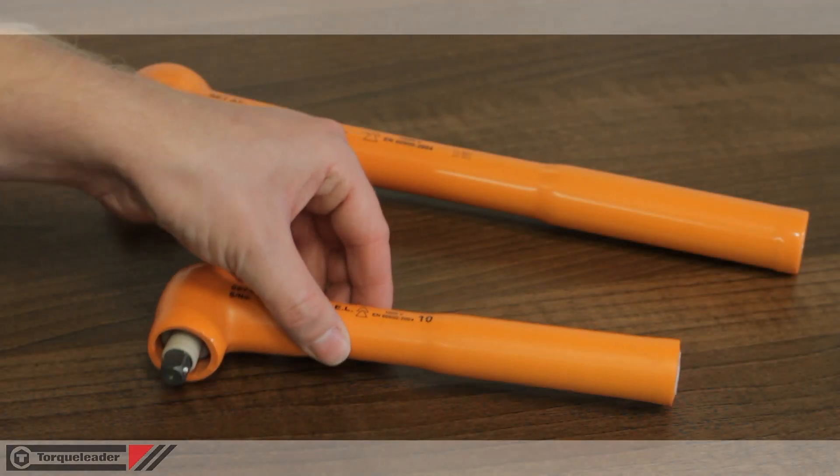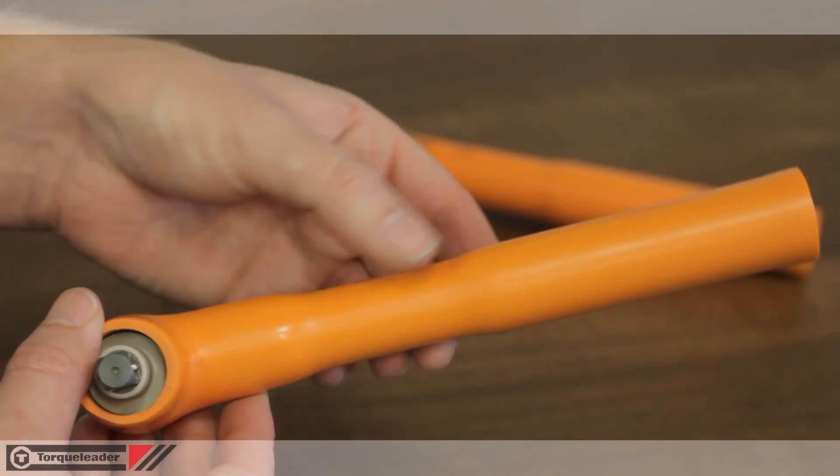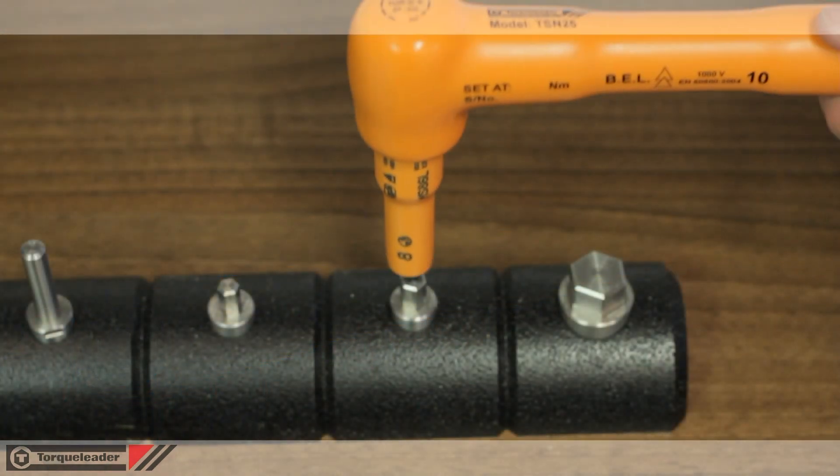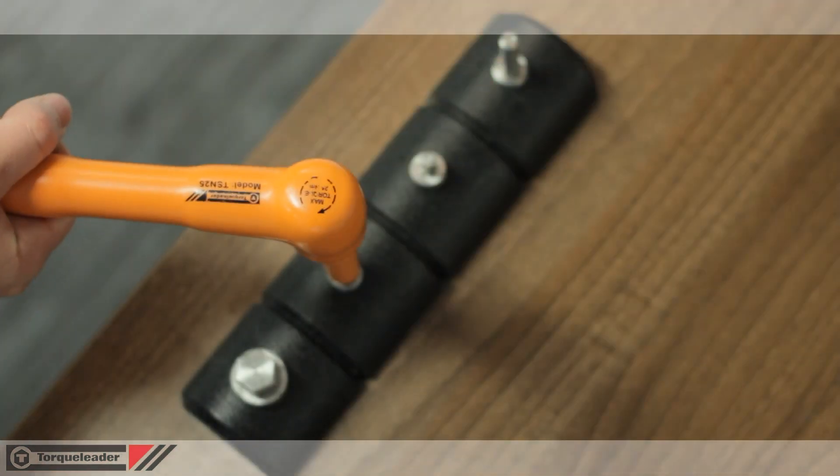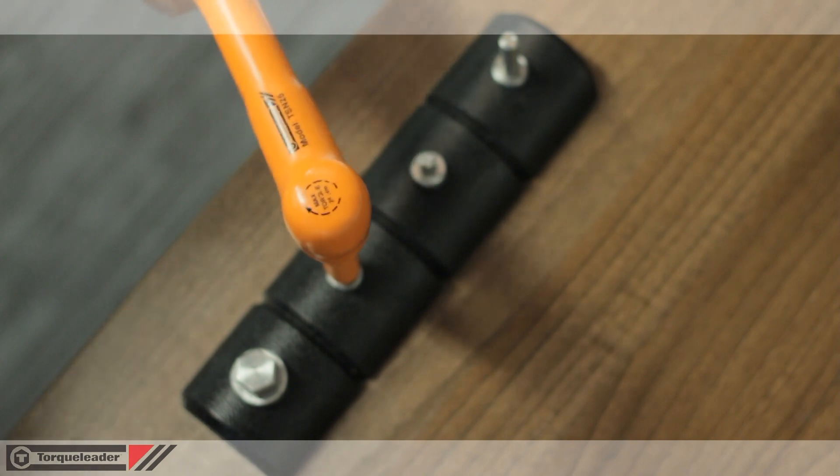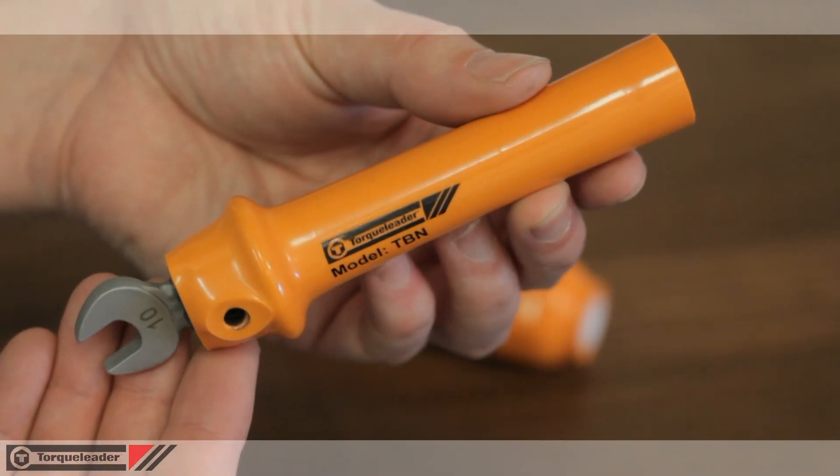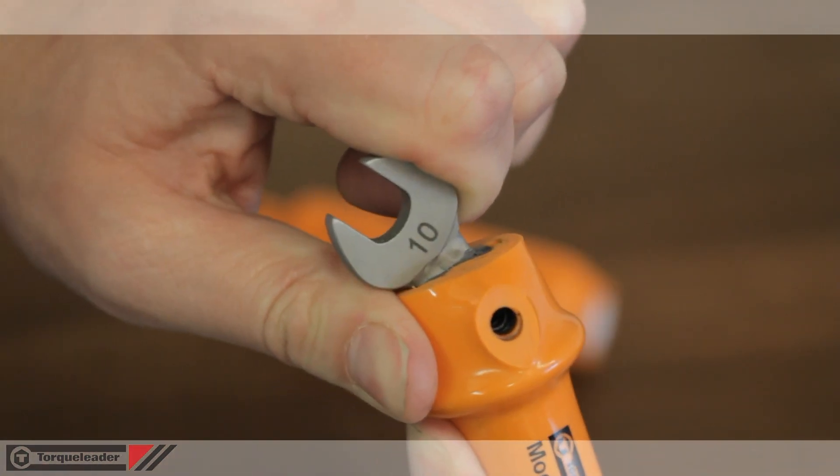Most Torque Leader 1000 volt tools incorporate a slipping mechanism. This prevents the operator from applying more than the set torque. A 20 degree braking mechanism is used with the open jaw fittings.